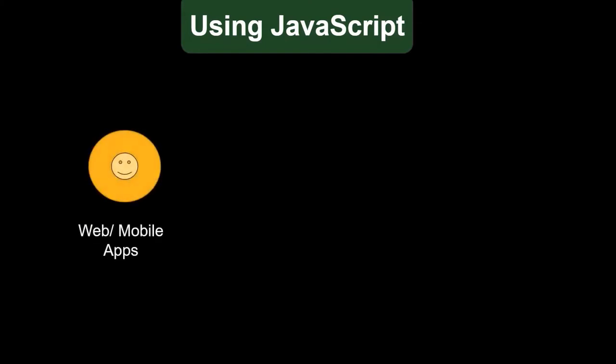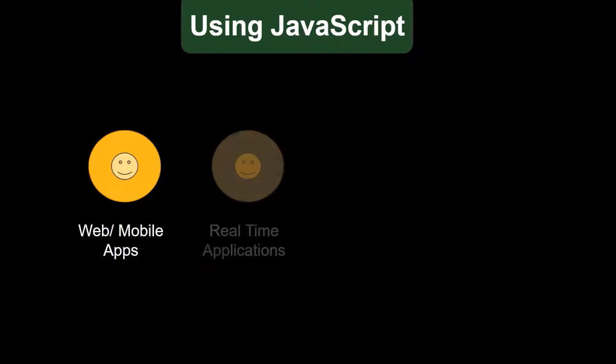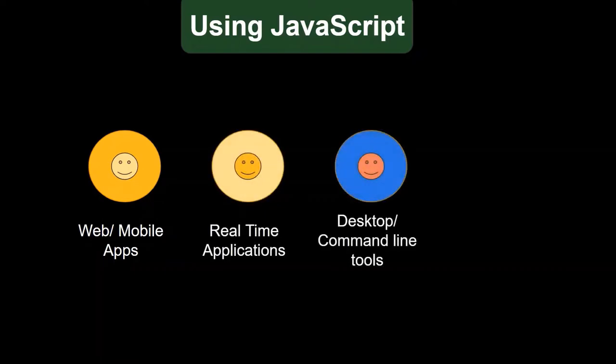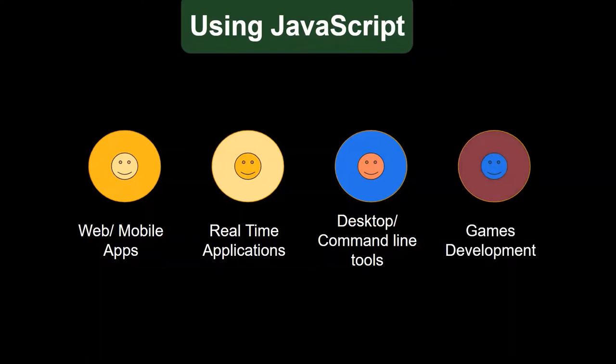Now let's answer the second question: What can you do with JavaScript? You can choose a career in front-end development, building UI interfaces using frameworks like React, Angular, or Vue. Or you can choose back-end development — writing server-side logic, dealing with APIs, databases, and real-time chat applications using Node.js and Express. The third and most popular option is full-stack development, where with a single programming language you can build both front-end and back-end. You can also build mobile apps, real-time chat apps, desktop applications with Electron.js, or even games.